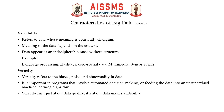Next comes variability. Variability refers to data whose meaning is constantly changing. The meaning of data obviously depends on the context. Data can appear as an indecipherable mass without structure. Examples include language processing, hash tags, geospatial data, multimedia, and sensor events. That refers to variability.